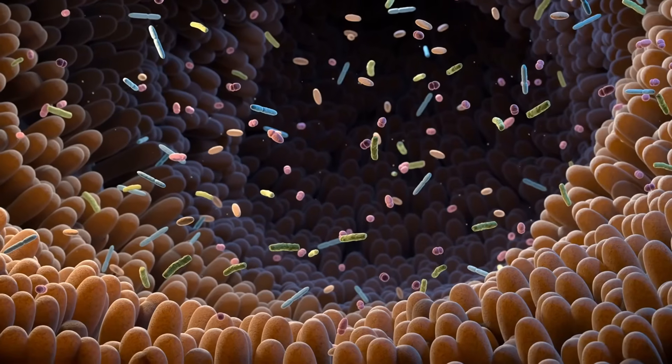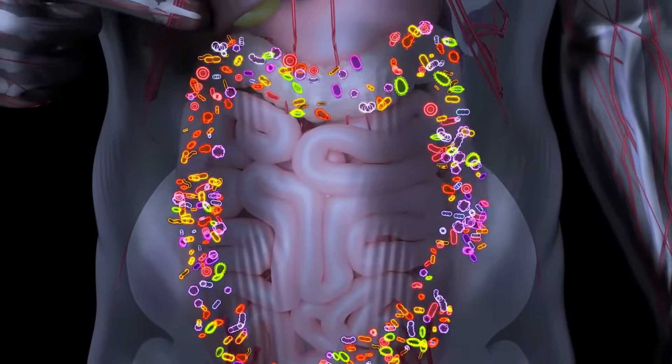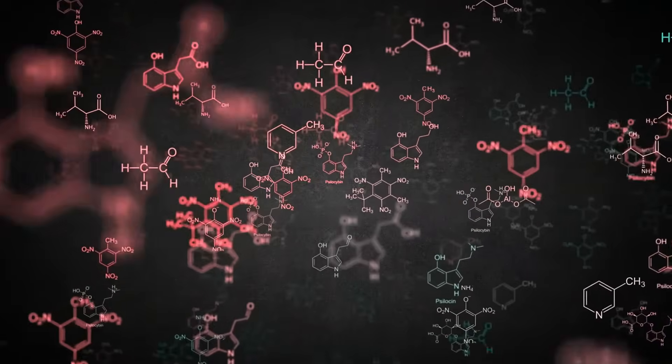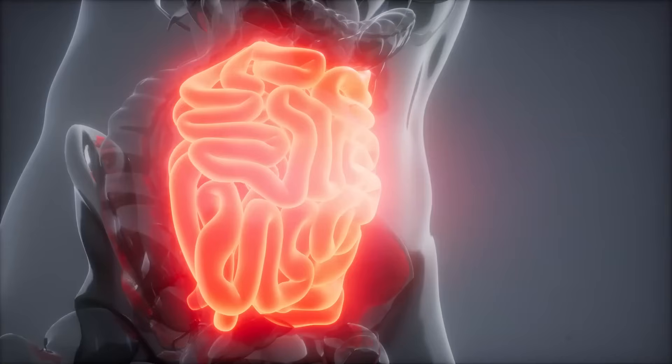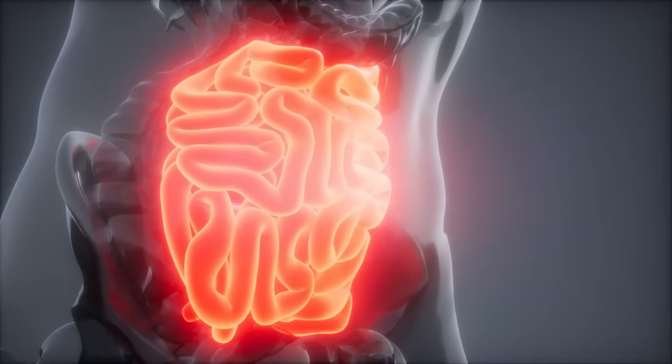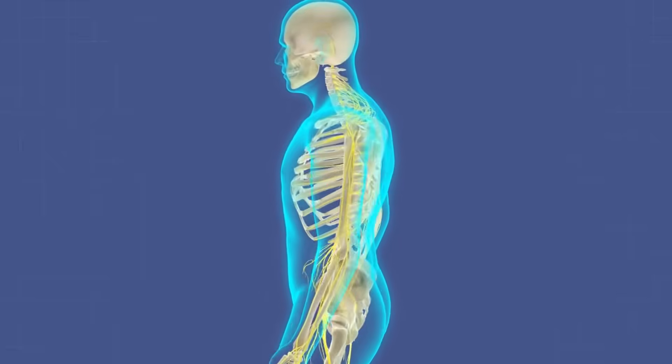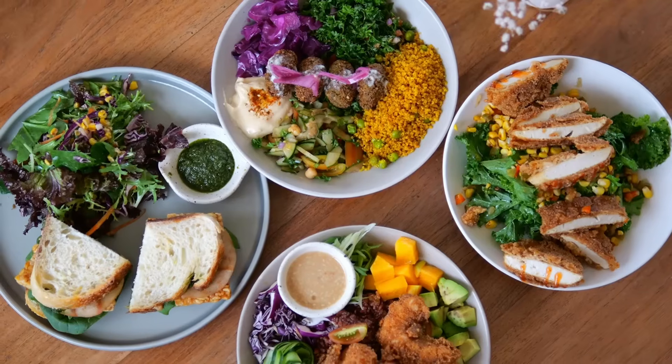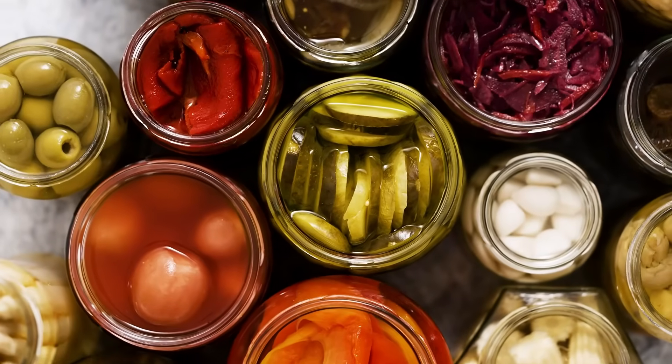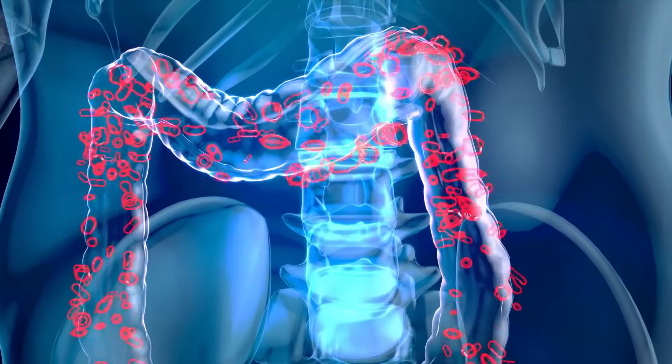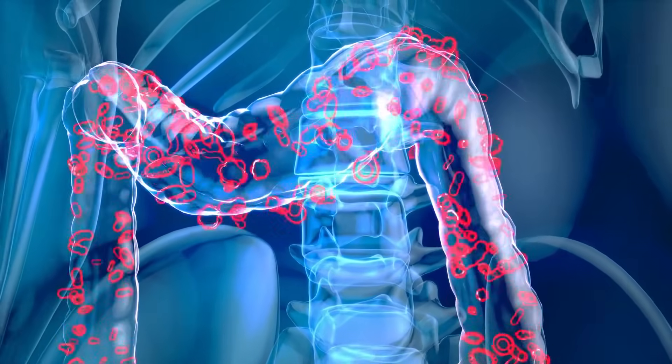Third, the gut-brain axis. Your gut is home to billions of bacteria that produce neurotransmitters like serotonin. An unhealthy gut leads to systemic inflammation, which affects the brain. Support your microbiome with prebiotic fiber, fermented foods, and minimal sugar intake. A healthy gut equals a healthier brain.